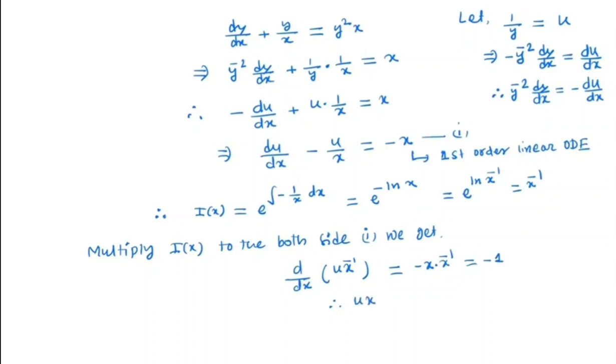So we have u·x^(-1) is the integral of -1 dx, which is -x + c.